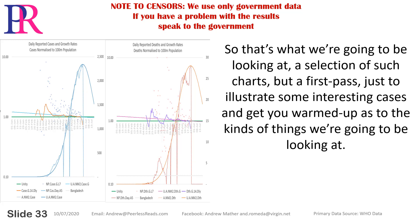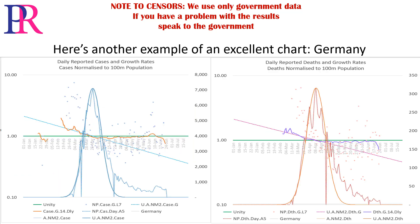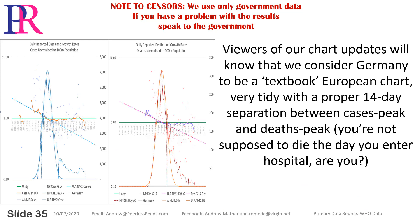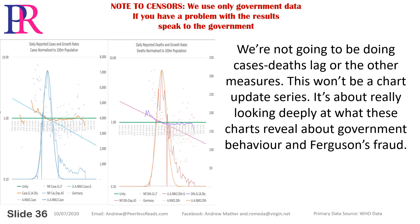So that's what we're going to be looking at — a selection of such charts, but a first pass just to illustrate some interesting cases and get you warmed up as to the kinds of things we're going to be looking at. Here's another example of an excellent chart: Germany. Viewers of our chart updates will know that we consider Germany to be a textbook European chart — very tidy, with a proper 14-day separation between cases' peak and deaths' peak. You're not supposed to die the day you enter hospital, are you? We're not going to be doing cases-deaths lag or the other measures. This won't be a chart update series.